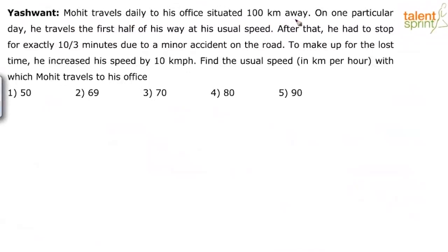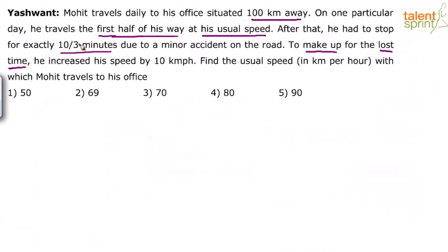Mohit travels daily to his office situated 100 kilometers away. On one particular day, he travels the first half of his way at his usual speed, after which he had to stop for exactly 10/3 minutes due to a minor accident. To make up for the lost time — meaning he wants to reach at the same time — he increases his speed by 10 kilometers per hour. Find the usual speed in kilometers per hour at which Mohit travels to his office.